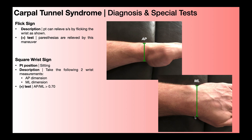Normally, the medial-lateral dimension is larger than the anteroposterior dimension. But in carpal tunnel syndrome, swelling on the palmar side of the wrist can increase the AP dimension. To interpret the test, take the ratio of AP divided by ML. A positive test is when this ratio is greater than 0.7; for a normal healthy carpal tunnel, the ratio will be less than 0.7.